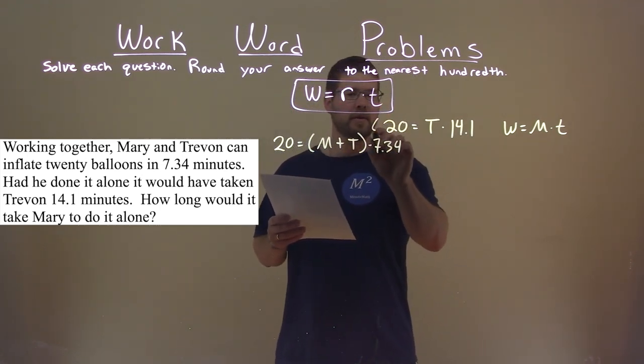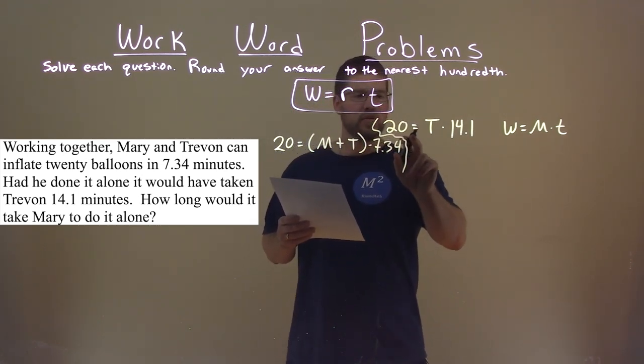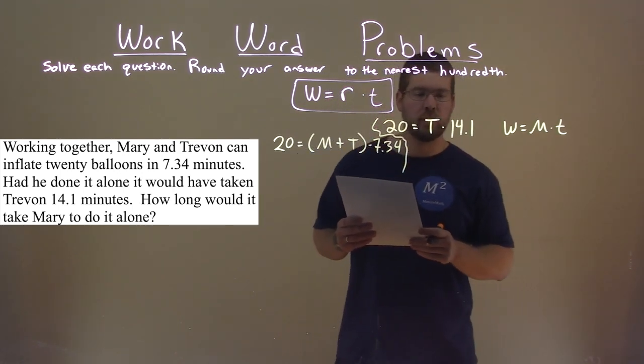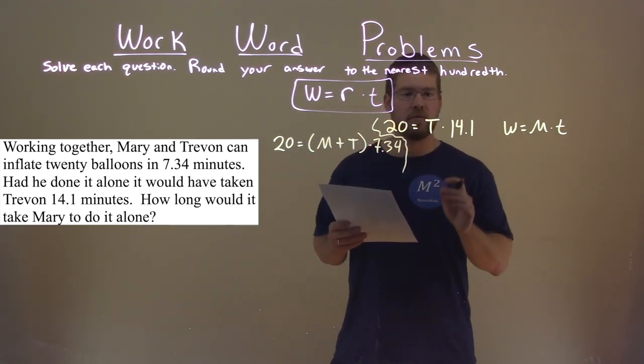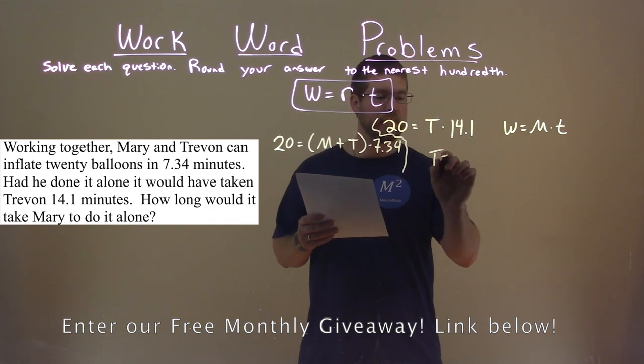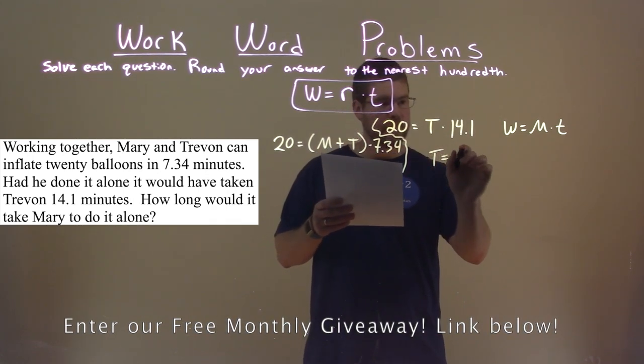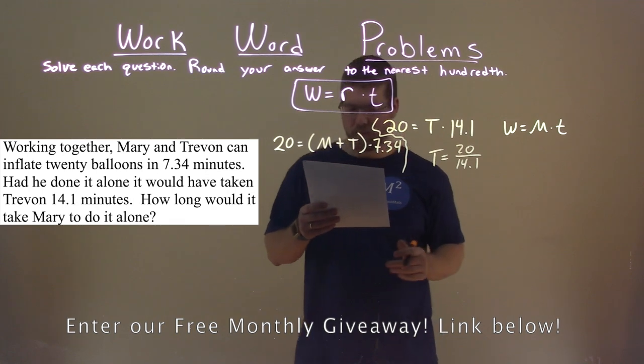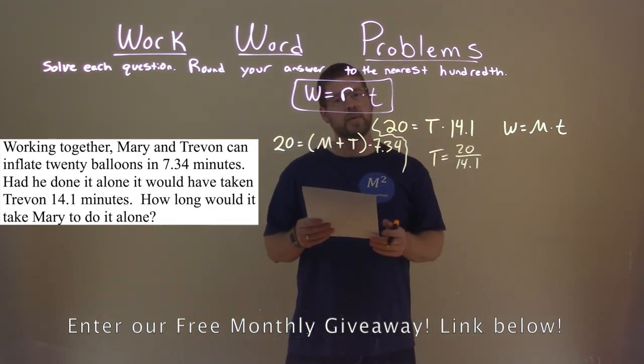Well, this equation, I kind of wrote it kind of close here, but 20 equals T times 14.1. Let's go find Trayvon's rate. Trayvon's rate is equal to 20 over 14.1 here. And that's going to be helpful.